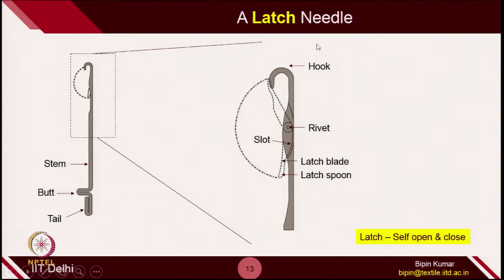Let's try to understand the latch needle. This needle is called a latch needle because the most important element of this particular needle is the latch. Starting from the parts: we have the hook at the top, then the rivet with which the latch is fixed and which allows the latch to move to different locations. The latch can go and close the hook, and it can also come out. Then we have the slot in which the latch blade can enter — this slot is grooved in the column of the needle on which the blade can sit. Apart from this, there is the stem part on which the loop slides, and then the butt and the tail.